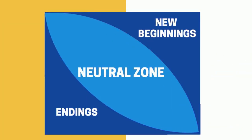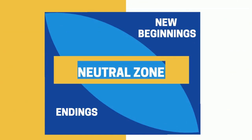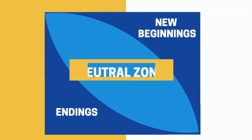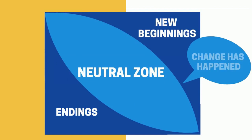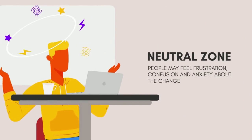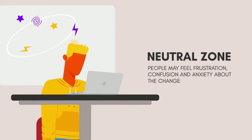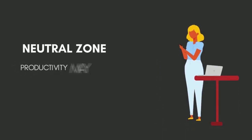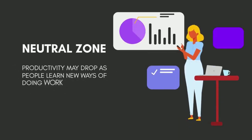Zone 2 is transitions and the neutral zone. When people transition to the neutral zone, they have accepted that the change has happened and that they have to move on. In some instances, people may feel frustration, confusion, and anxiety about the change. Productivity may also drop as people learn new ways of doing work.